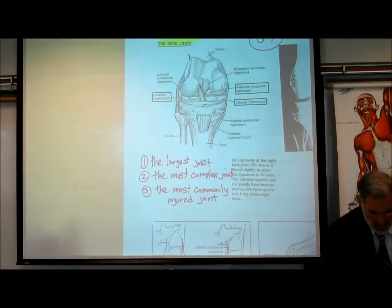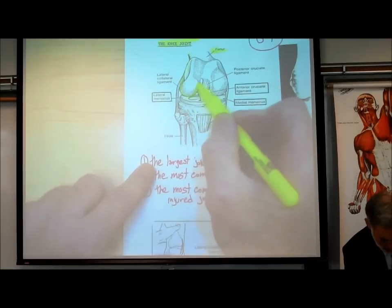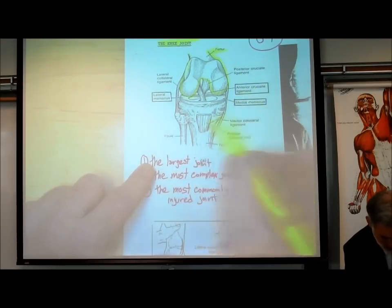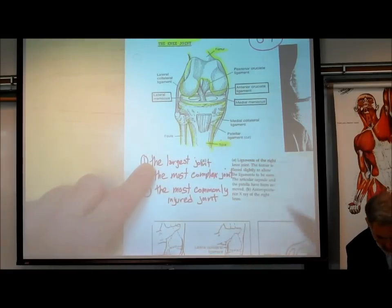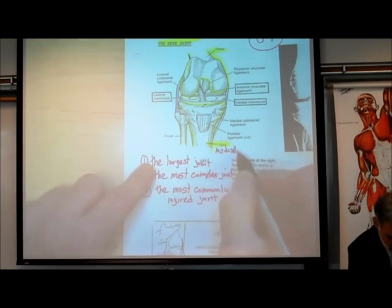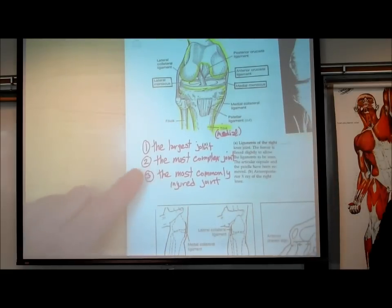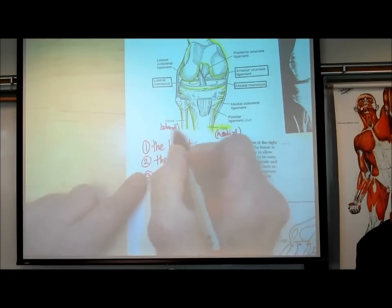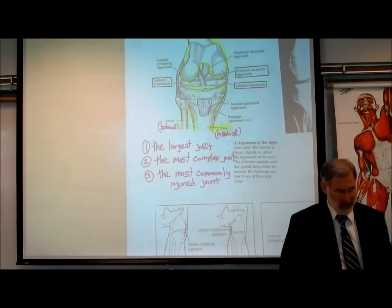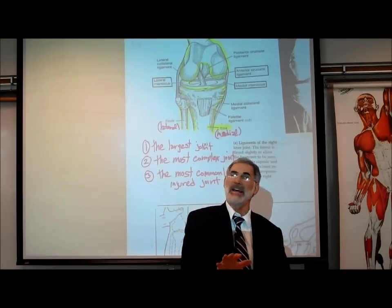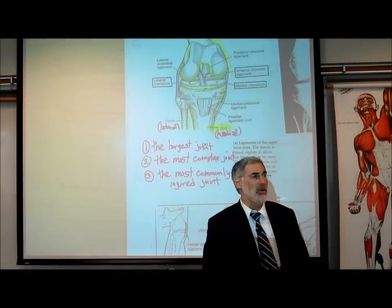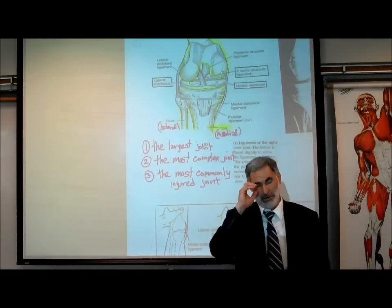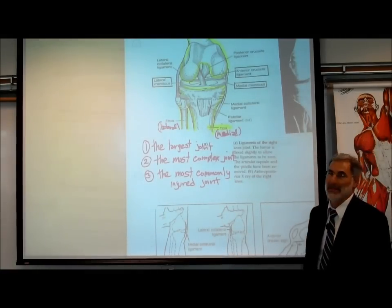Here is the femur — the distal end of the femur. This is, of course, the tibia and the fibula. The tibia is medial — remember TM, tibia medial. So the medial bone of the lower leg is the tibia, and the fibula is lateral. The femur only attaches and articulates with the tibia, not with the fibula. This makes it different than at the elbow, where the humerus attaches to both the radius and ulna — an important difference most people don't realize.